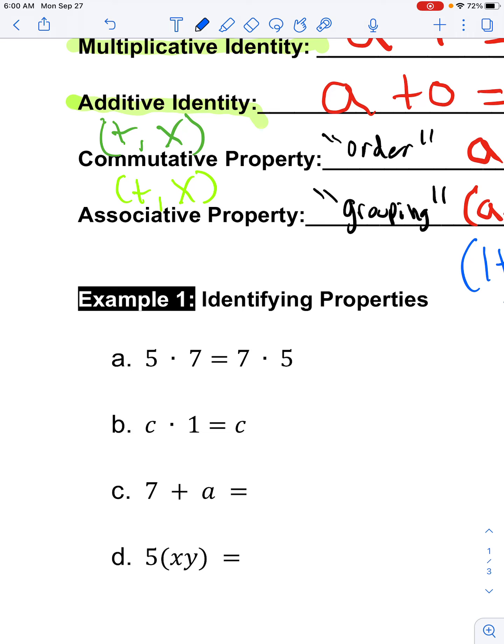Looking at this first one, I see I have five multiplied by seven equals seven multiplied by five. That's talking about how I order my multiplication. So we would call this the commutative property of multiplication.